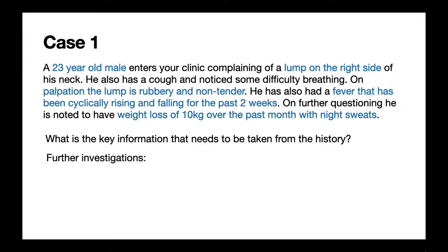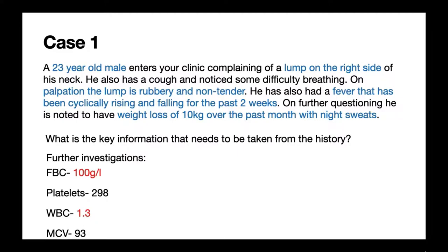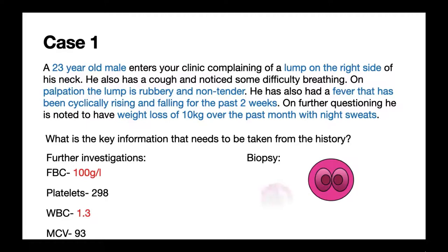On further investigation, basic bloods show a haemoglobin of 100, platelets of 298, white cell count of 1.3, and an MCV of 93. The abnormal findings are the anaemia and the low white cell count. We then carry out a biopsy of the lump to see what might be going on, and a histology slide is examined.